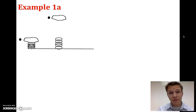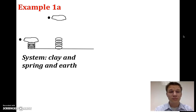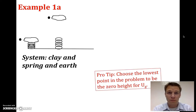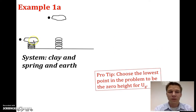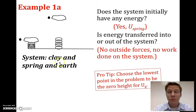Example 1A: the system is the clay, spring, and earth. A pro tip: choose the lowest point in the problem as zero height for UG. Initially the clay is not moving, then the spring releases and launches the clay up, and the clay is not moving at the top either. The system initially has energy stored in the spring. Is energy transferred into or out of the system? No — since we have everything in the system, there are no outside forces doing work.